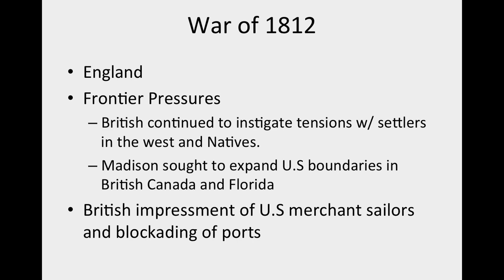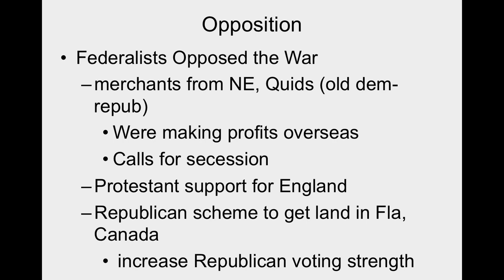The War of 1812 breaks out — a war with England again. The war was fought on American soil. The English came to the United States, burned down Washington D.C., and were eventually defeated in a famous battle in Baltimore where the Star-Spangled Banner was written. The causes include decades of tensions over the impressment of sailors, the blockading of ports, and British instigating tensions with settlers on the frontier. Deep down, Madison and the Democratic-Republicans wanted to expand boundaries — if they could defend or limit a takeover, they could maybe access more territory in British Canada and Florida.